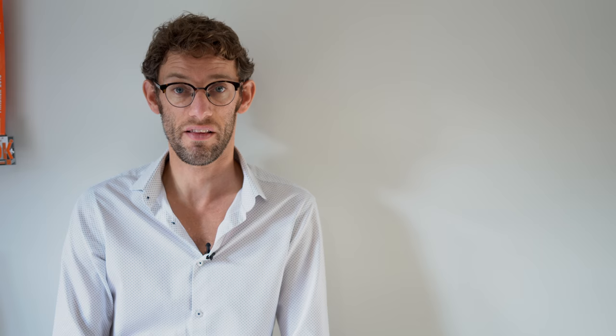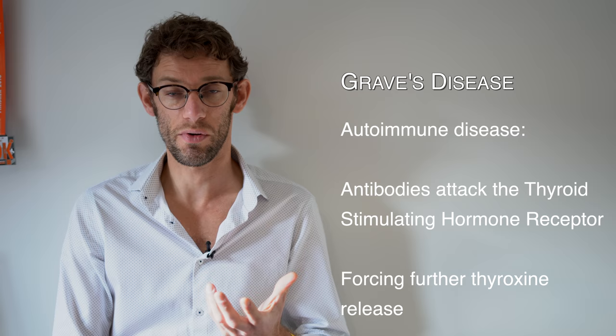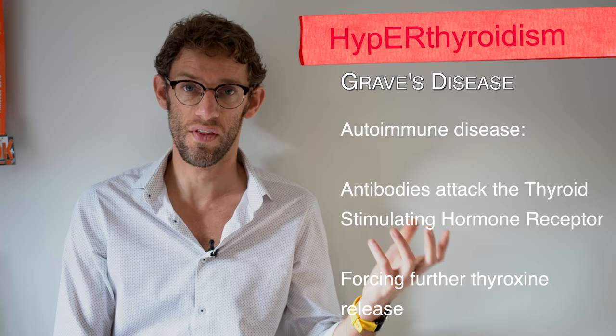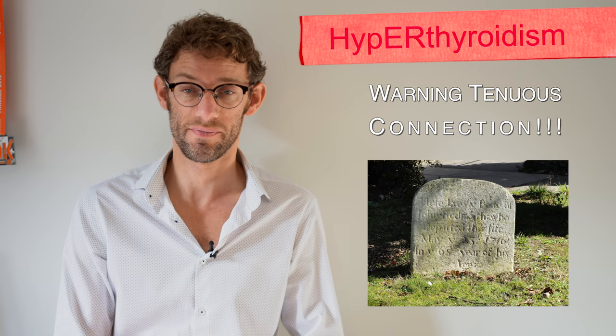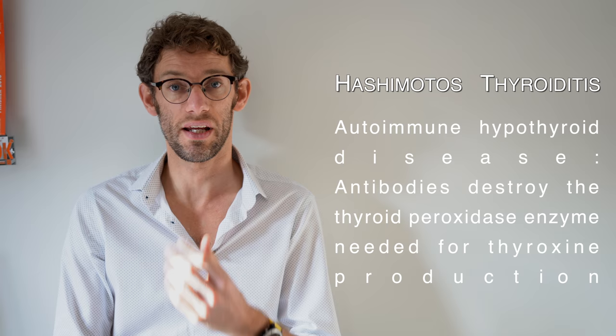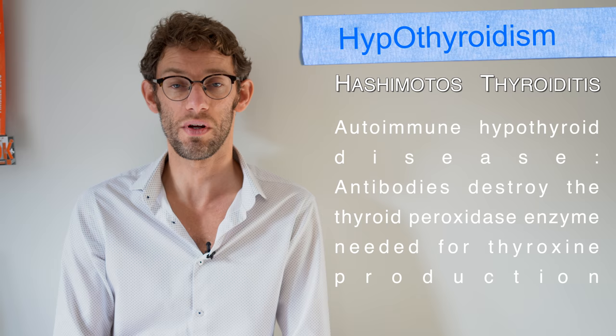There are two types of autoimmune thyroid disease with eponymous names: Graves' disease and Hashimoto's thyroiditis. With Graves' disease, antibodies are produced to the TSH receptor on the thyroid, driving the thyroid harder and causing hyperthyroidism — I remember this because untreated hyperthyroidism can be severe and potentially fatal, i.e. you might end up in your grave. Hashimoto's thyroiditis also involves autoimmune antibodies, but they destroy the thyroid gland, resulting in hypothyroidism, which we can treat by replacing thyroxine.